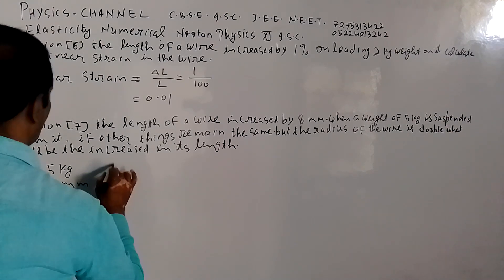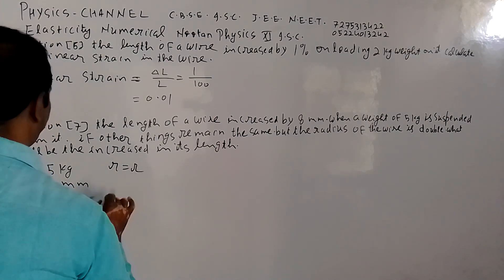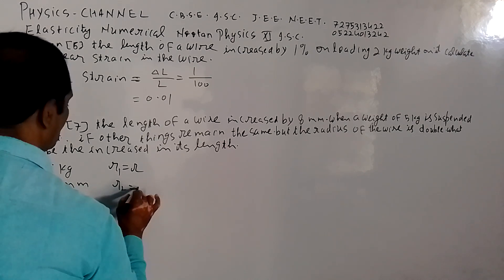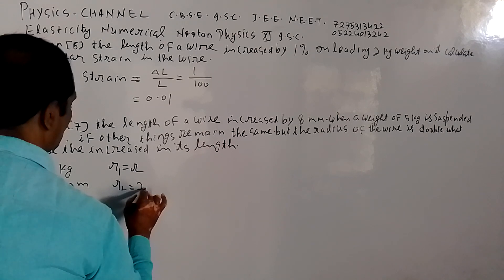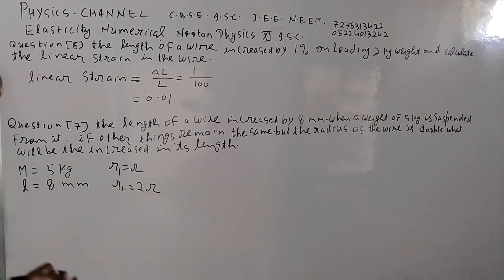The radius of the wire: R1 to R2. R2 is 2 times R1. The radius is doubled.